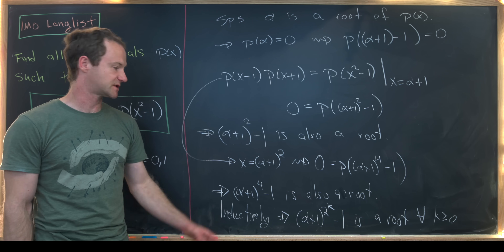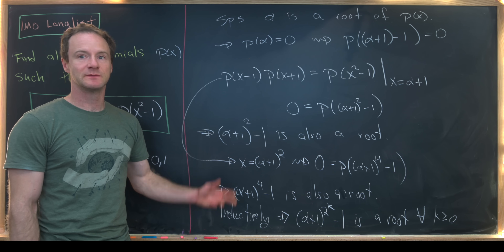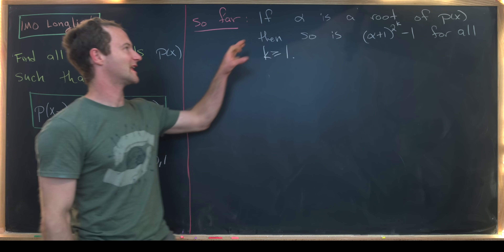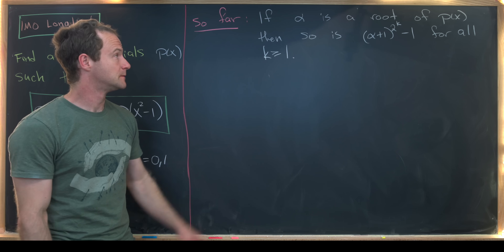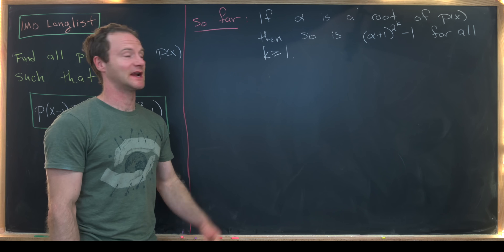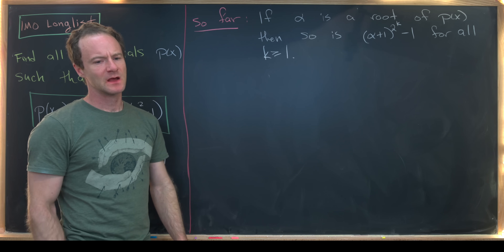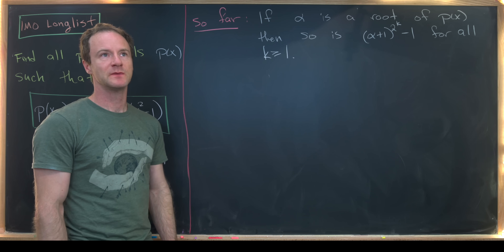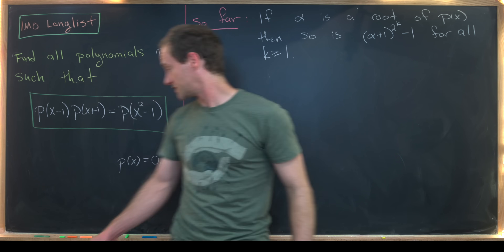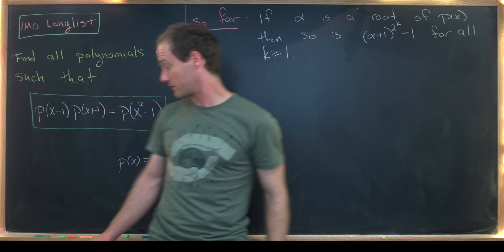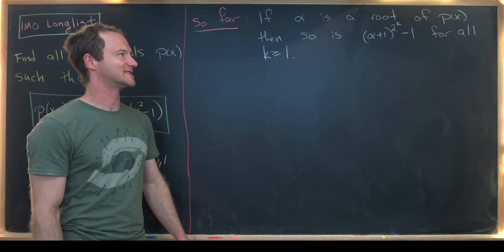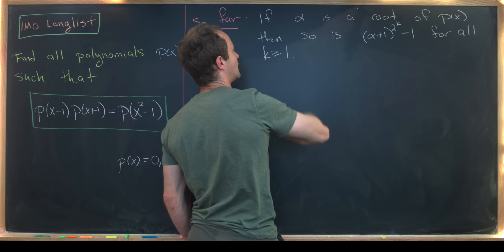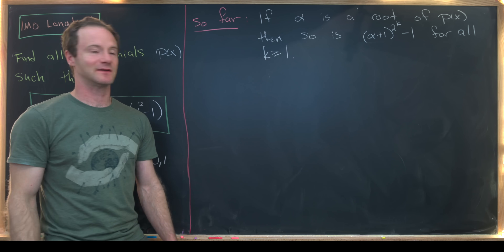Notice that's infinitely many roots — unless α takes on some very special values. We've determined that if α is a root, then so is (α+1)^(2^k) - 1 for all natural numbers k. This is problematic because the only polynomial with infinitely many roots is the zero polynomial, which we've already handled. So we need to find special values of α that make this list contain only finitely many elements.